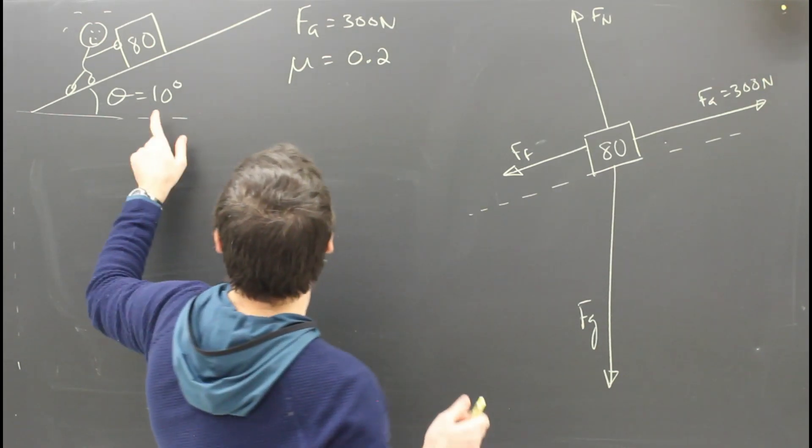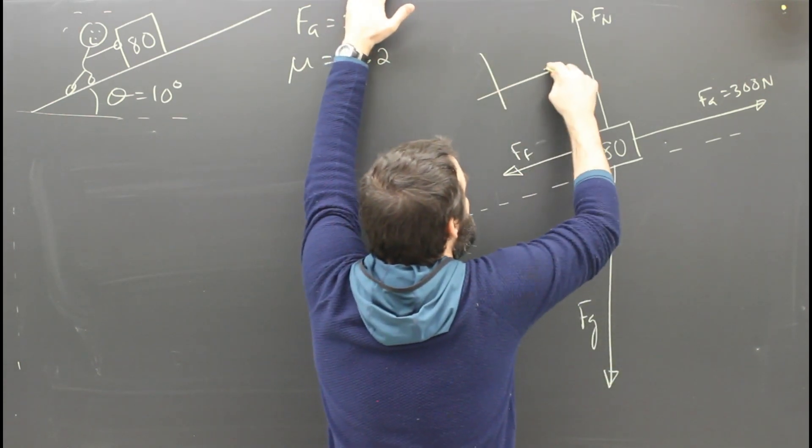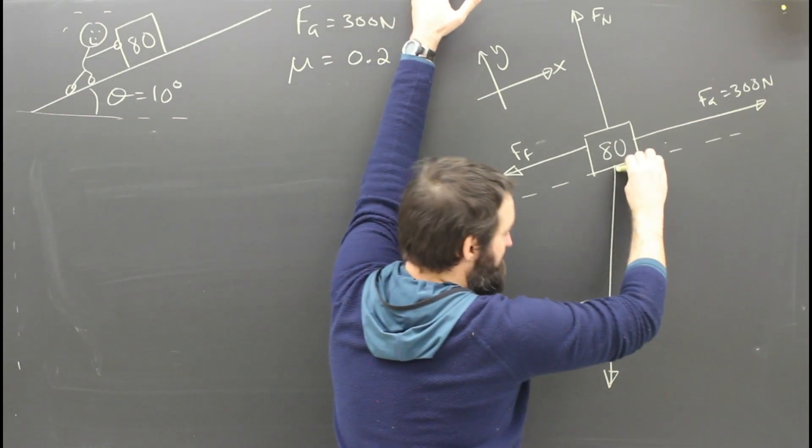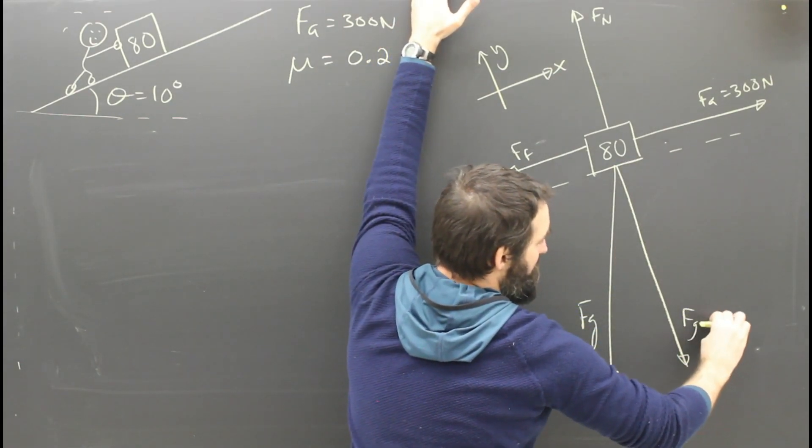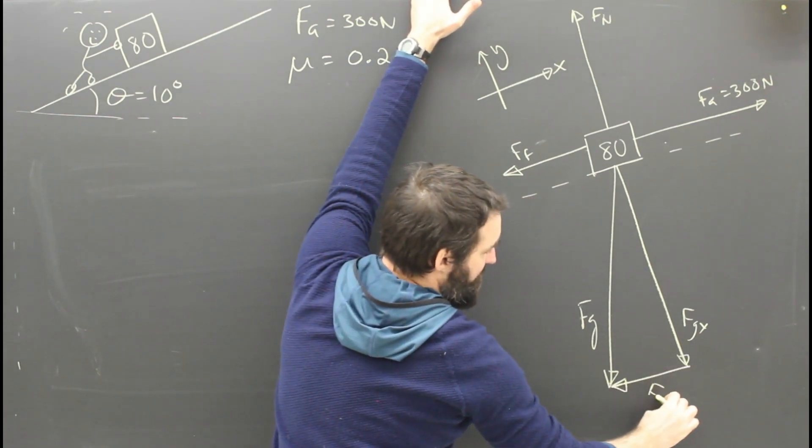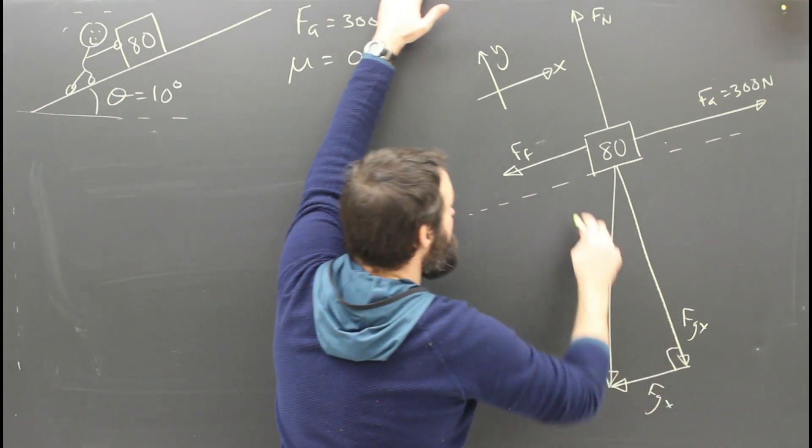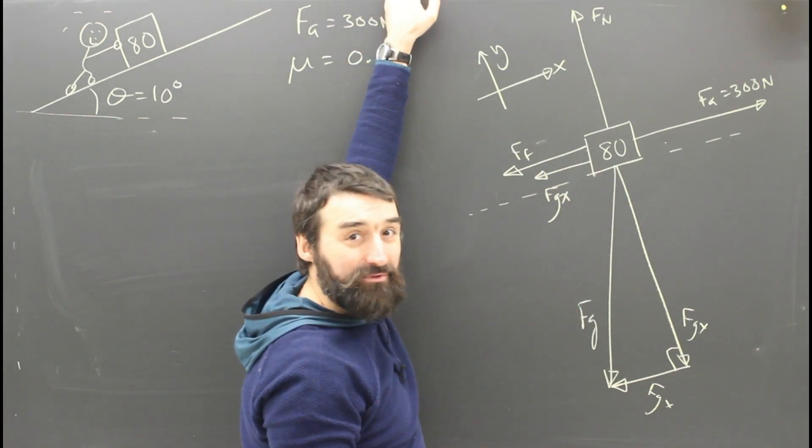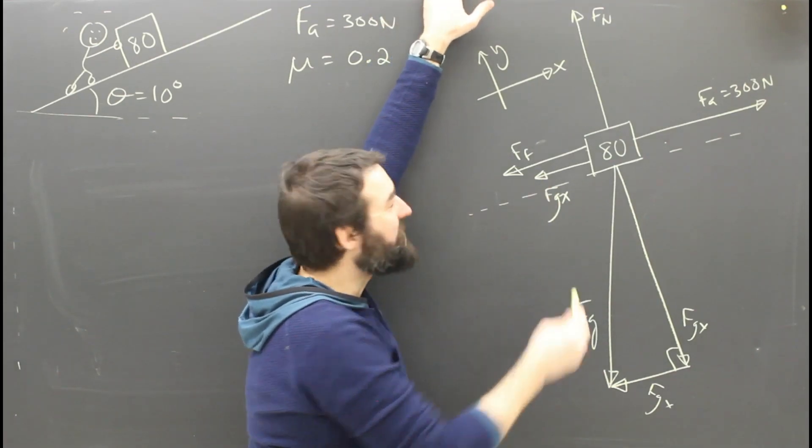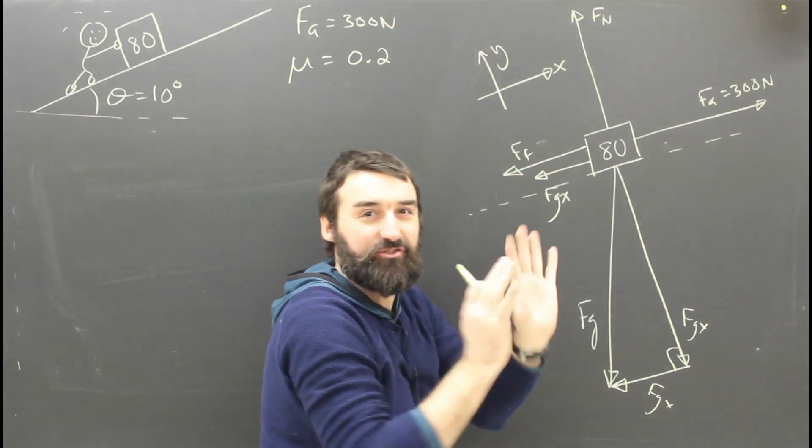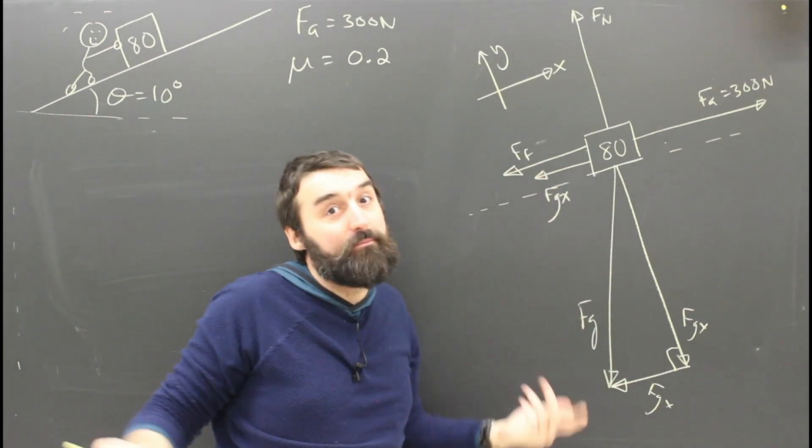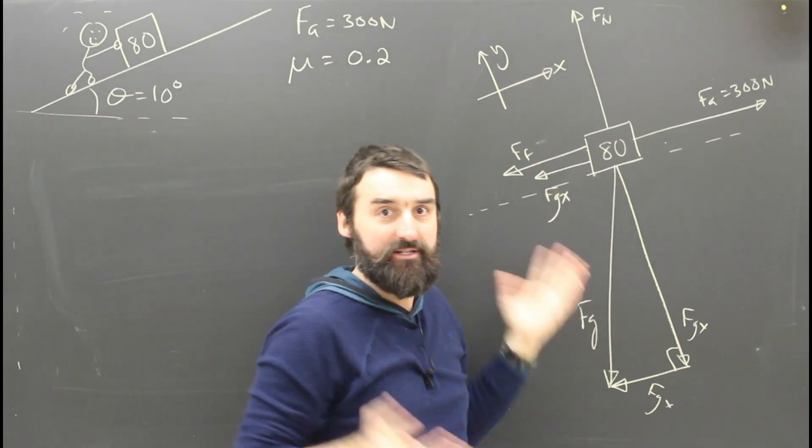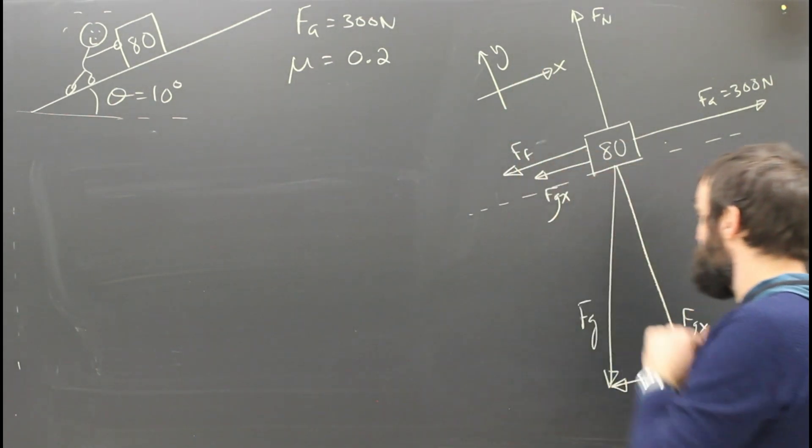So those are all the forces. I know this thing is accelerating up the ramp, so I'm going to call up the ramp x. And that means I've got to break gravity into x and y components. So I've got FGY and I've got FGX. I'm going to draw FGX again over here, because for some reason kids love to forget about it. It's like when students see one force in each direction, they just sort of stop and they don't think about the fact that there could be more than one force in the same direction.